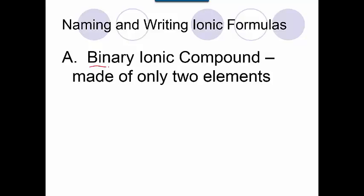The first one we're going to look at is binary. When you have a binary ionic compound, that just means there's only two elements that make up the compound, the one metal and the one non-metal.